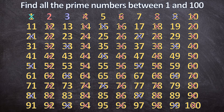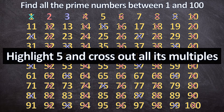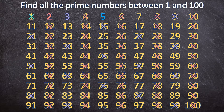Next, you highlight 5 and cross out all its multiples. 10 is already crossed out, 15 is already crossed out, 20 is already crossed out. So the first one I'm going to cross out now is 25, and then I continue — 95 is my last one.